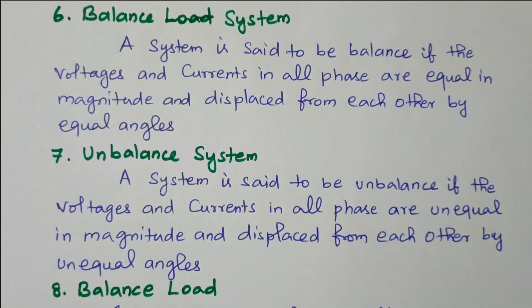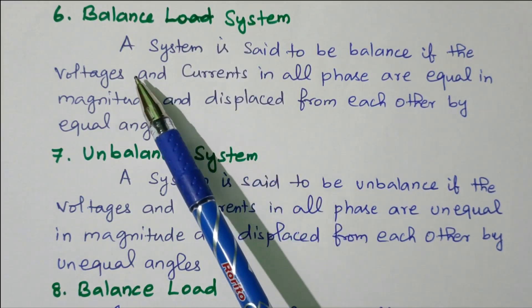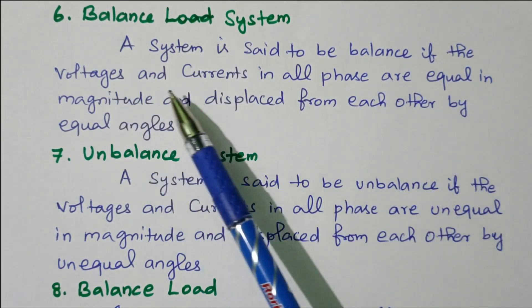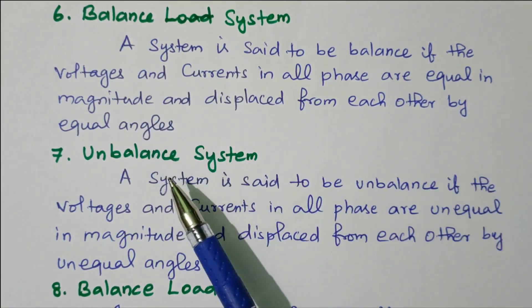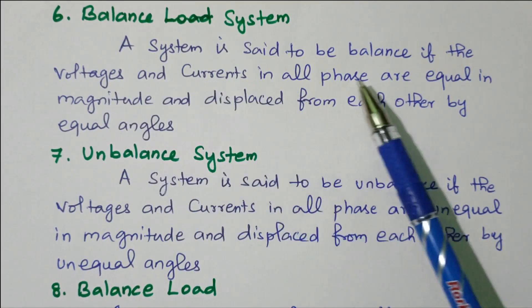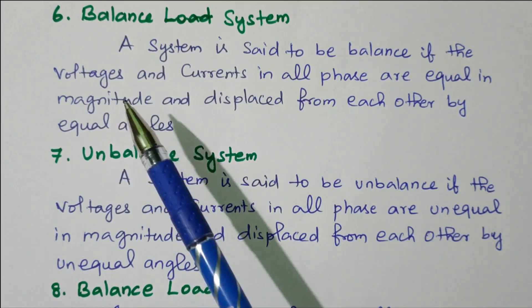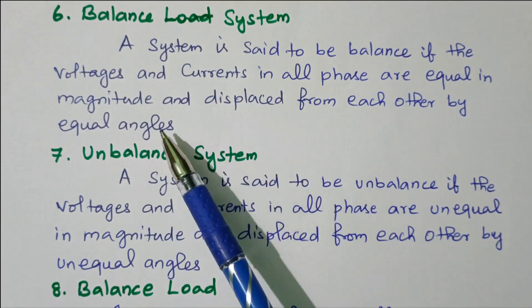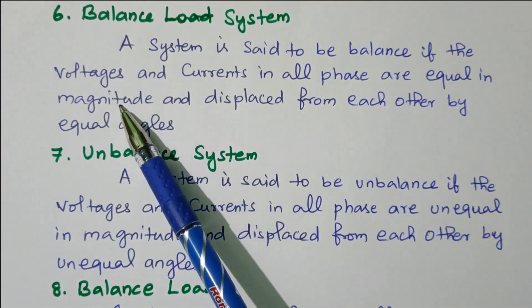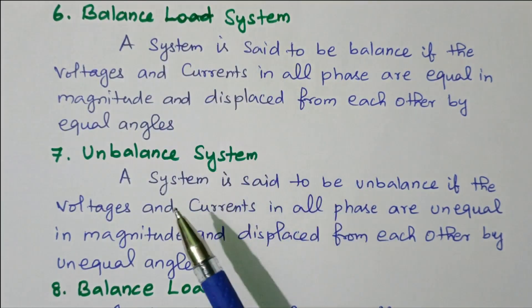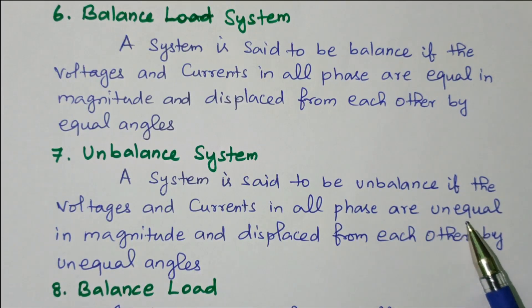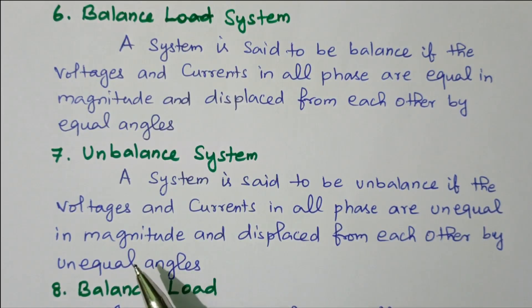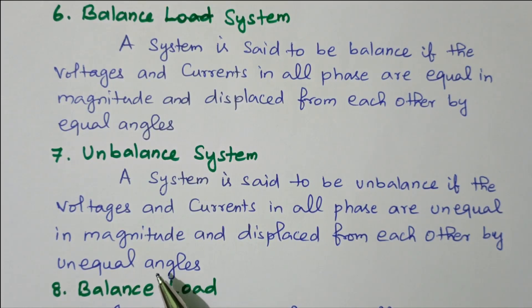Balanced system: a system is said to be balanced if the voltages and currents in all phases are equal in magnitude and displaced from each other by equal angles. Unbalanced system: a system is said to be unbalanced if the voltages and currents in all three phases are unequal in magnitude and displaced from each other by unequal angles.